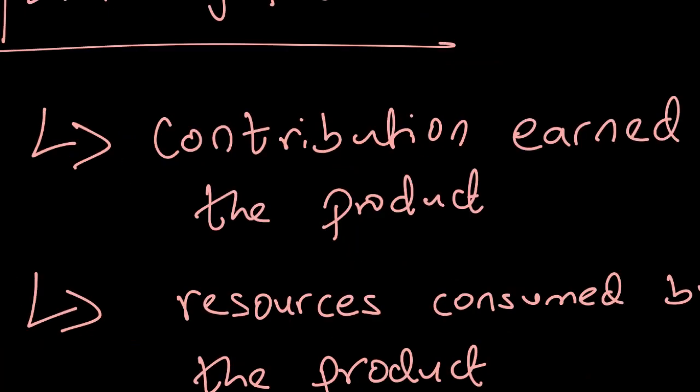This metric that we just developed—contribution upon limiting factor—is essentially doing two things. Number one, it's comparing the contribution earned by the product: how much does that product earn versus how much of the resource has been consumed by the product. Based on this, a firm can decide which product to prioritize over the other products, and whatever plan we make according to this ranking should at the end of the day yield the maximum profit available.